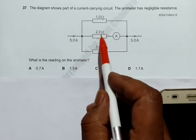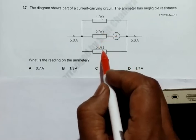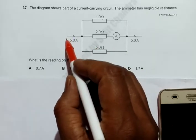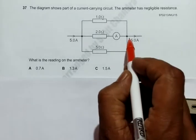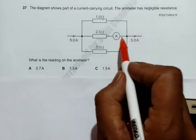of three resistors with resistances 1 ohm, 2 ohm, and 5 ohm in parallel. The current flowing into the arrangement is 5 amperes and the current coming out is also 5 amperes. So we have to find the reading in this ammeter.